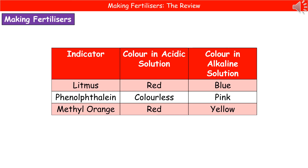A reminder about the single indicators we use: litmus, phenolphthalein, and methyl orange. Litmus is red in acidic solution and blue in alkaline. Phenolphthalein is colorless in acidic and pink in alkaline. Methyl orange is red in acidic and yellow in alkaline. These have very distinctive end points with no ambiguity about the color, unlike universal indicator.